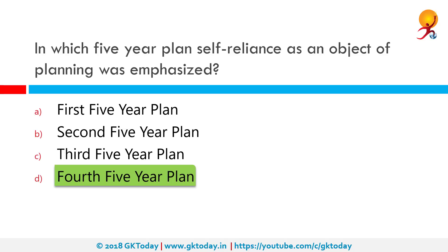This plan failed and could achieve a growth rate of only 3.3%, whereas the target was 5.7%.